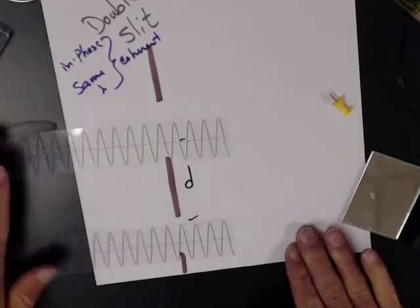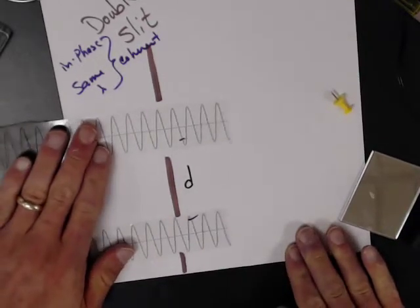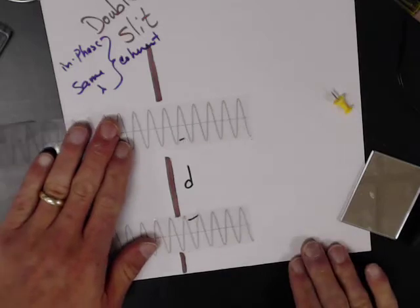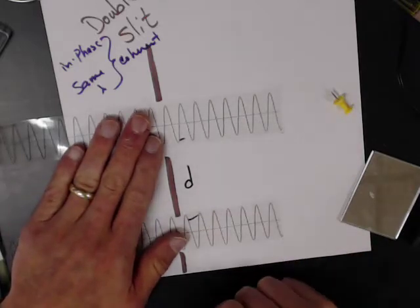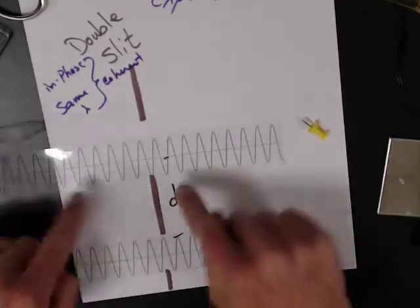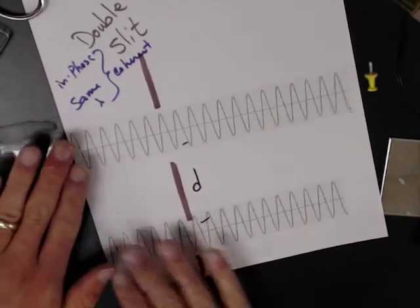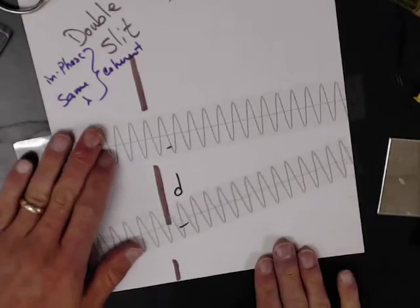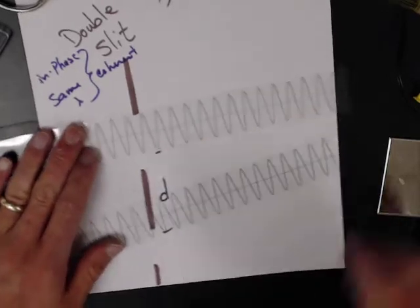And so then these waves now leave this source, come through here, and diffract. So that means they spread out. And so we wanted to see if this is true, then when they come out, they're going to meet somewhere, I'm going to have some sort of interference.